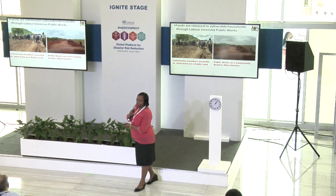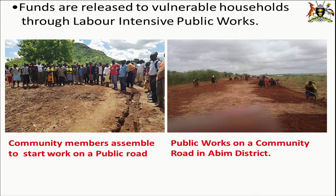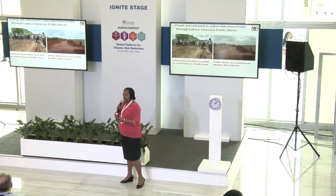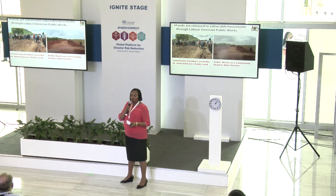Under disaster risk financing, we give payouts during drought shocks. Communities are given labor-intensive public works, such as working on community roads and water sources, and then they are given payouts during the drought to build their resilience. The photos show communities working on a community road — the first photo shows them agreeing on the kilometers to cover, and the second shows women working on the road. The next important research should be about the impact of disasters on women.